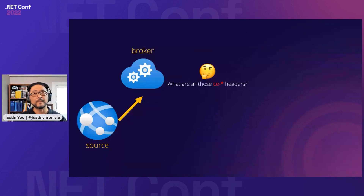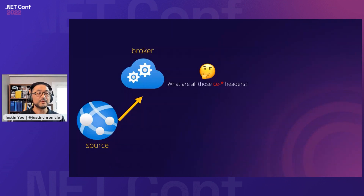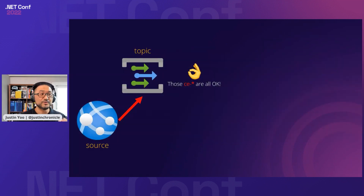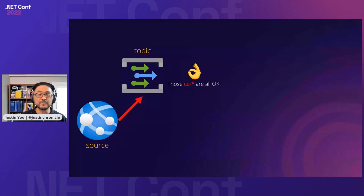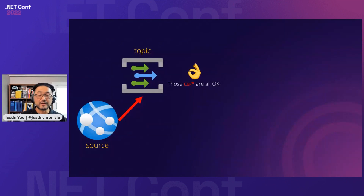But that's cumbersome. Azure Event Grid topic does everything for you. Instead of using your own event broker, you just replace it with Azure Event Grid topic. Then Azure Event Grid topic understands everything — the CE-prefixed request headers, all the event data including the context metadata area. All you need to do is send an event from your event source using cloud event format.